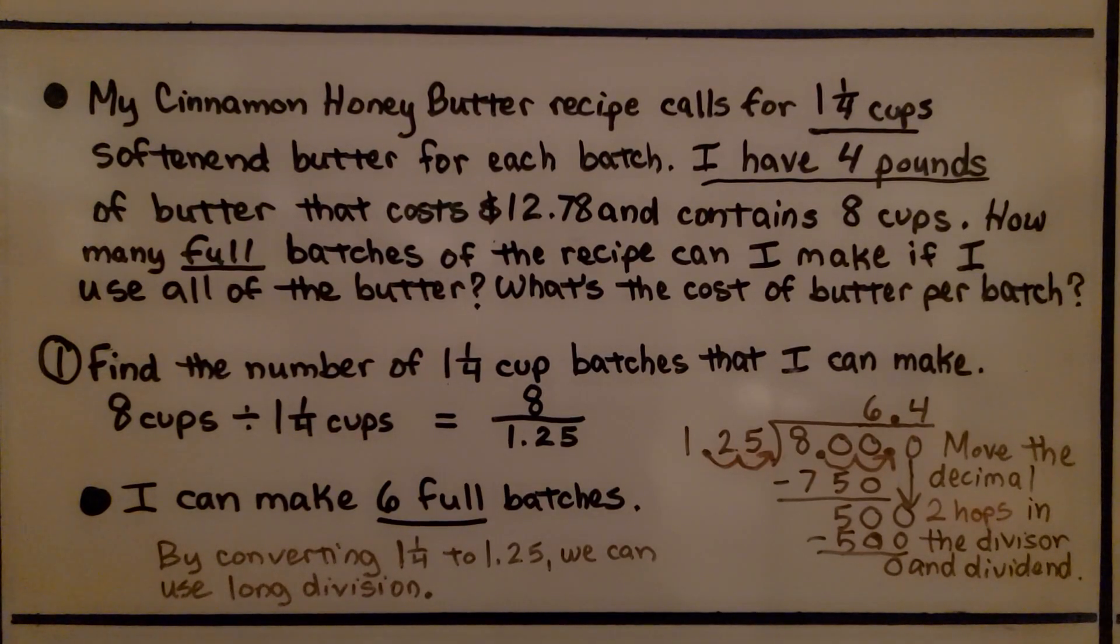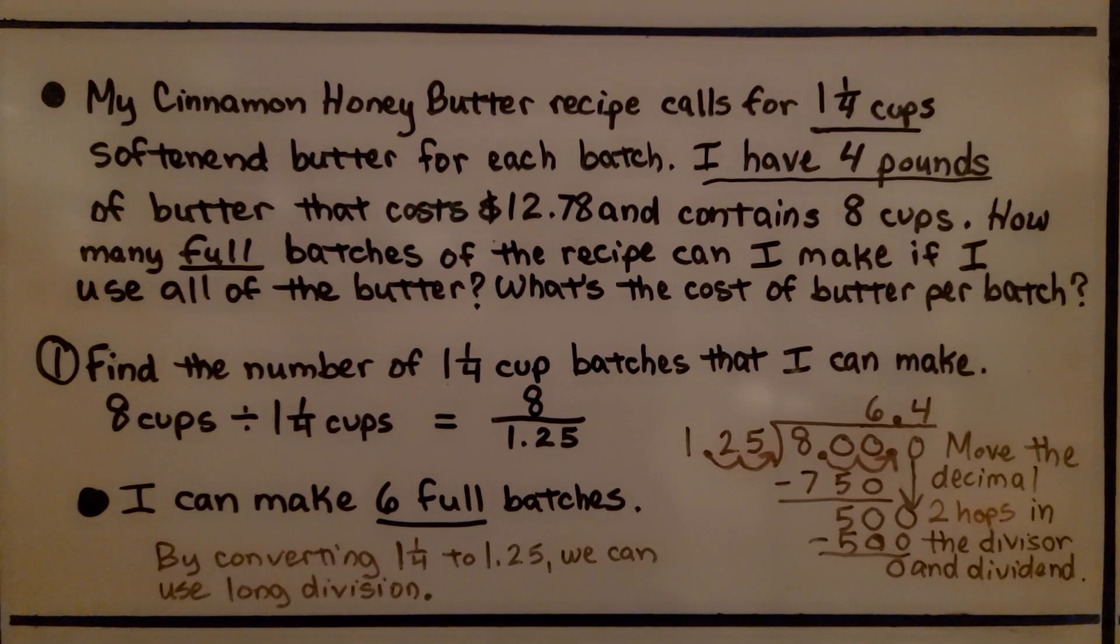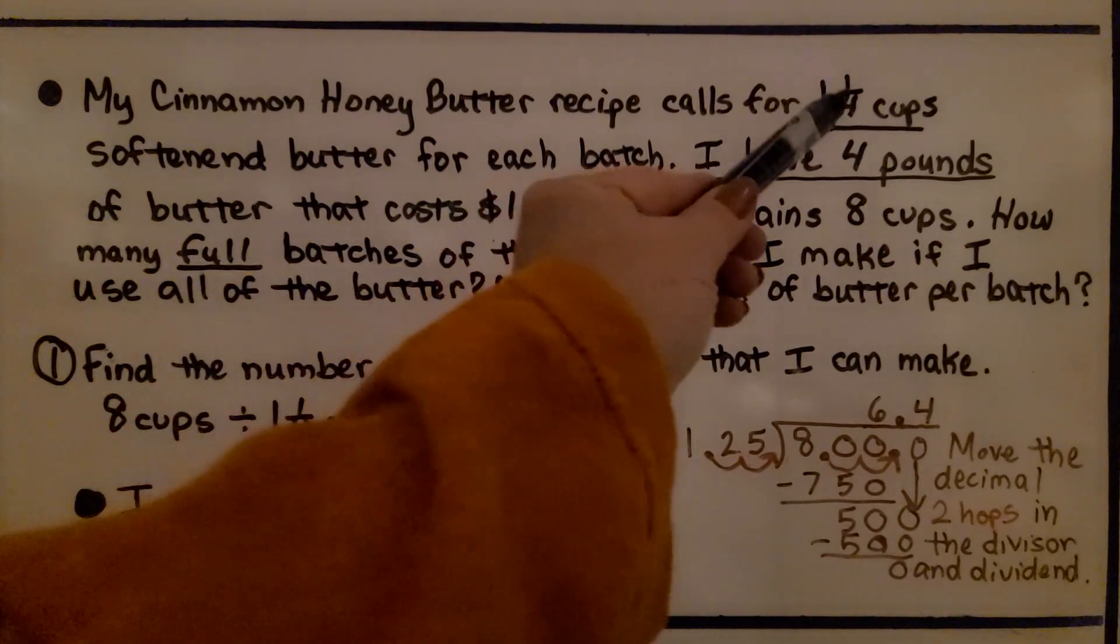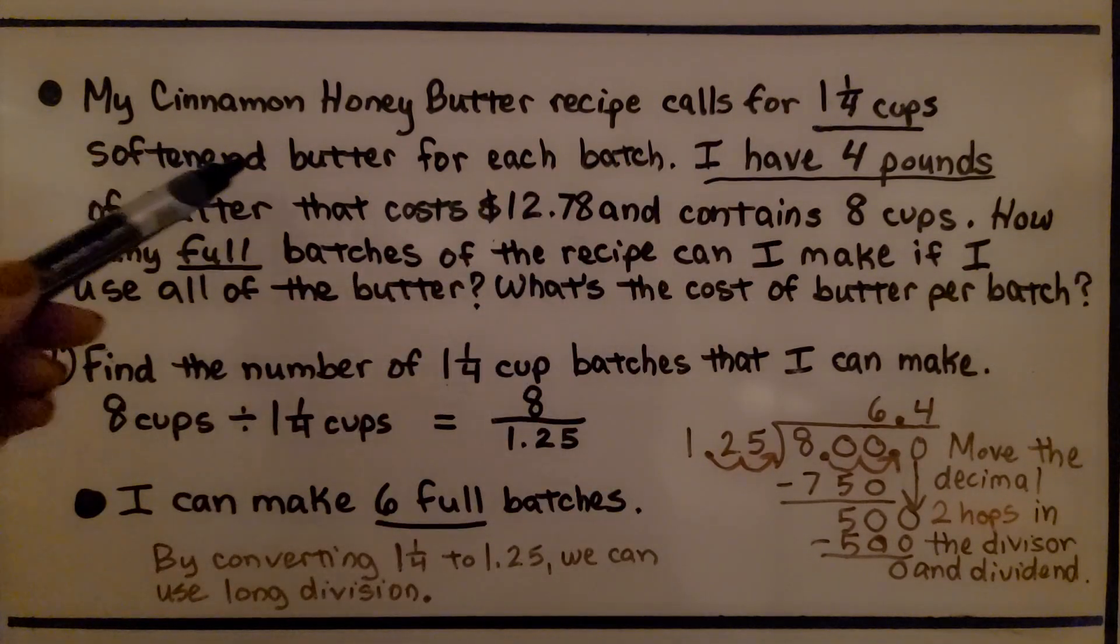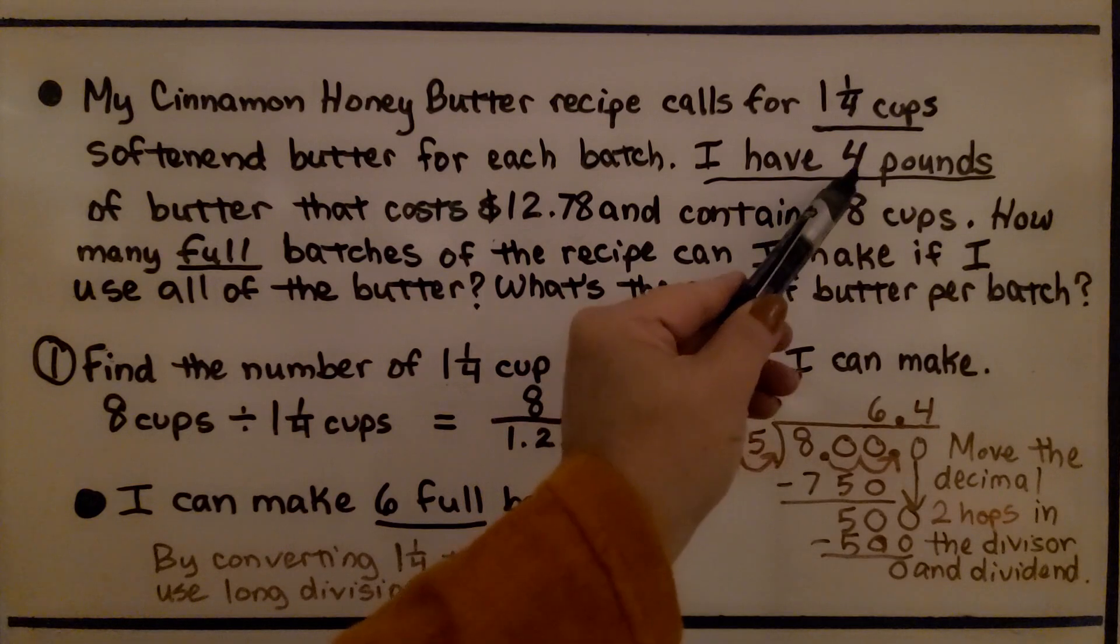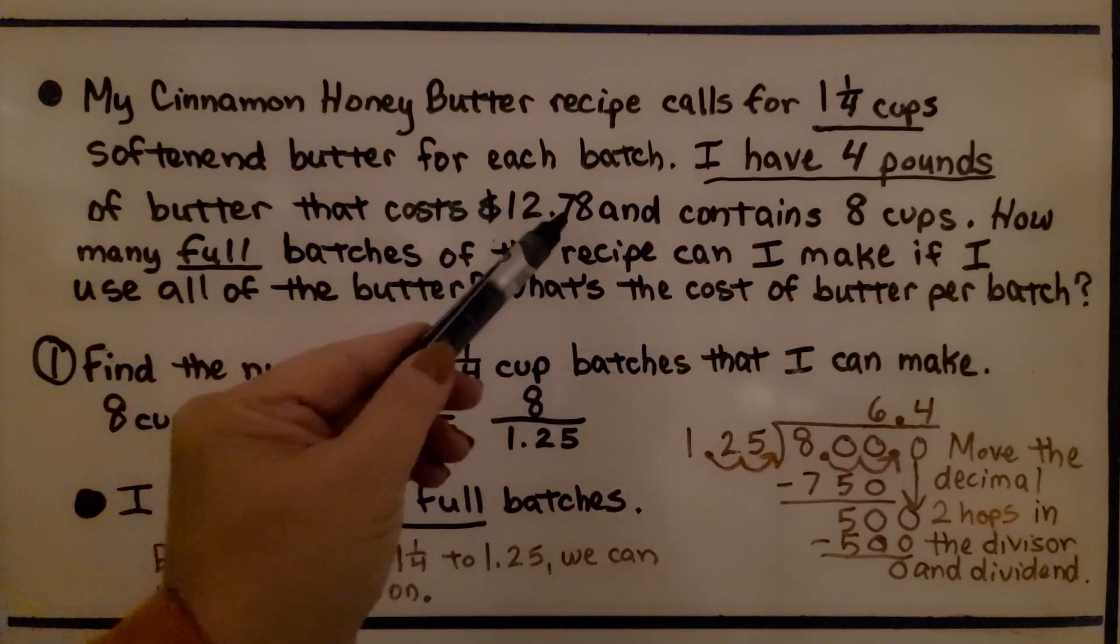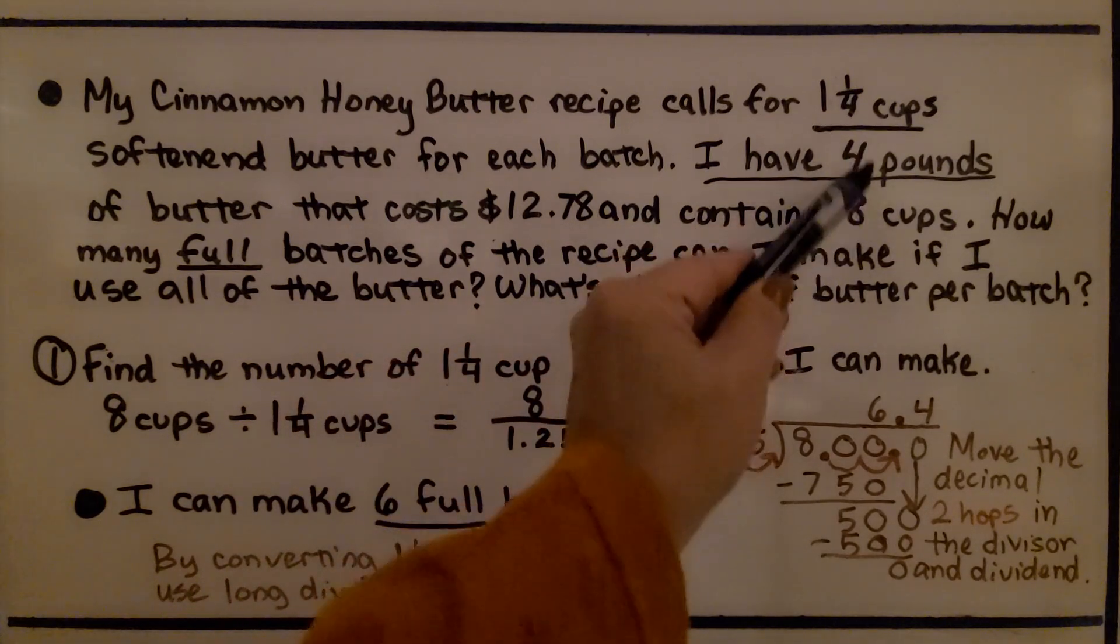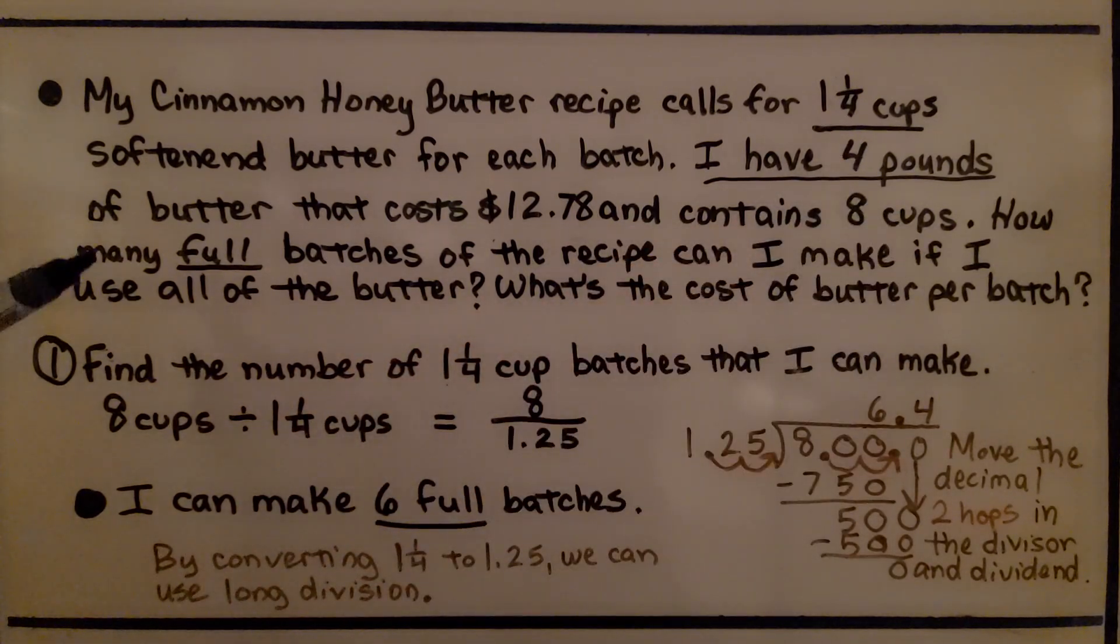I have a cinnamon honey butter recipe that calls for 1 and 1/4 cups of softened butter for each batch. If I have 4 pounds of butter that costs $12.78 and it contains 8 cups in that 4 pounds,